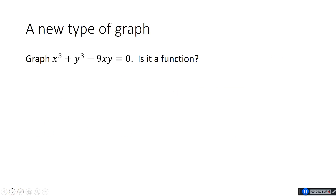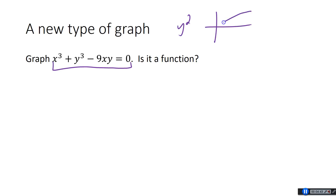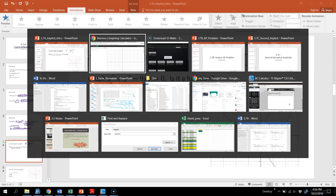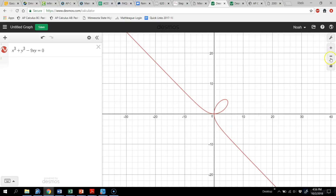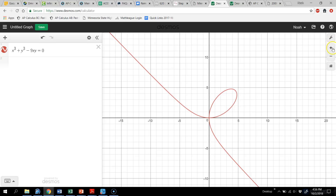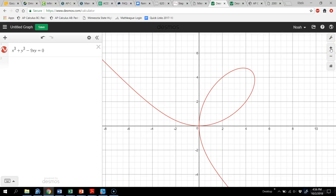Today we're looking at implicit differentiation. Implicit functions are something you may have seen in pre-calc. If you graph x³+y³−9xy=0 in Desmos, you get something that is definitely not a function — it has a loop. When you do things with y's like squaring, generally it won't create a function. If we zoom in, we have this interesting loop, and the rest approaches a line as x goes to positive or negative infinity.